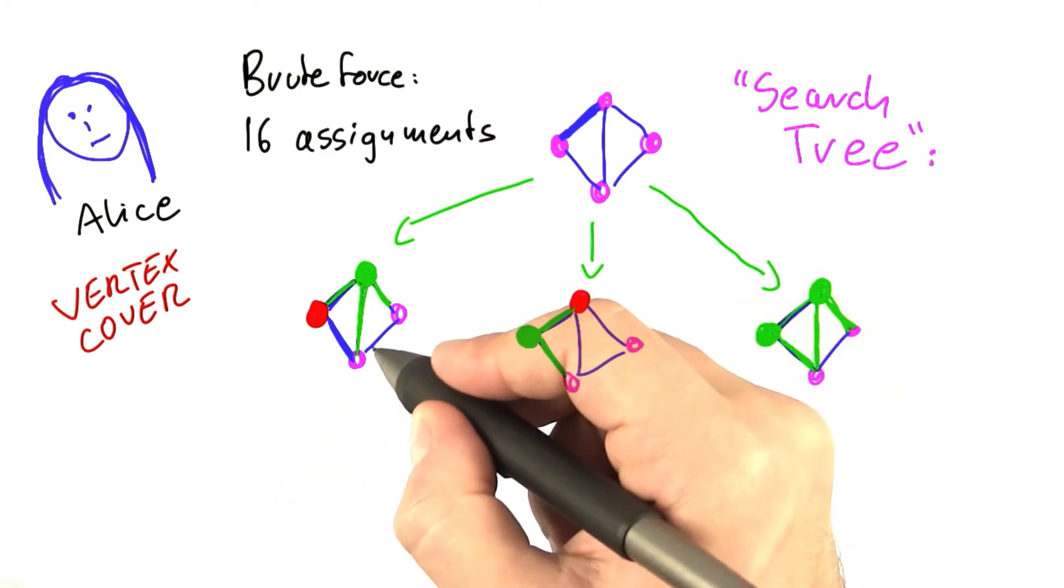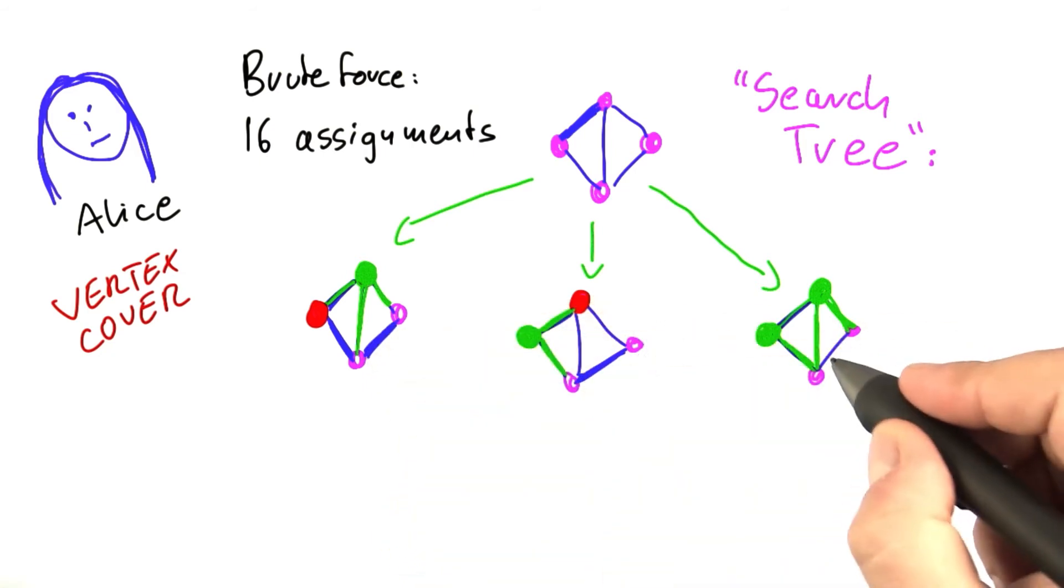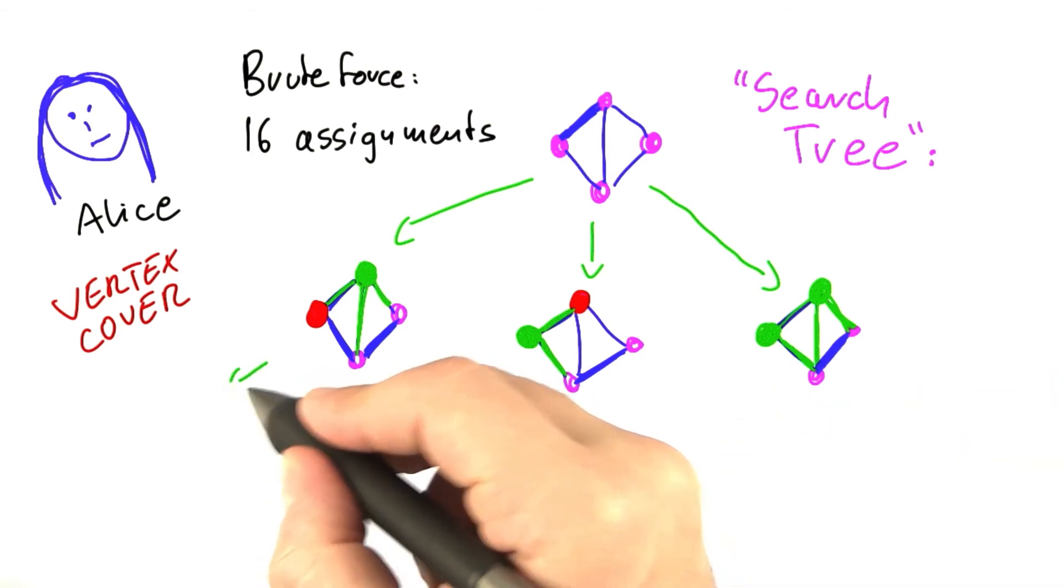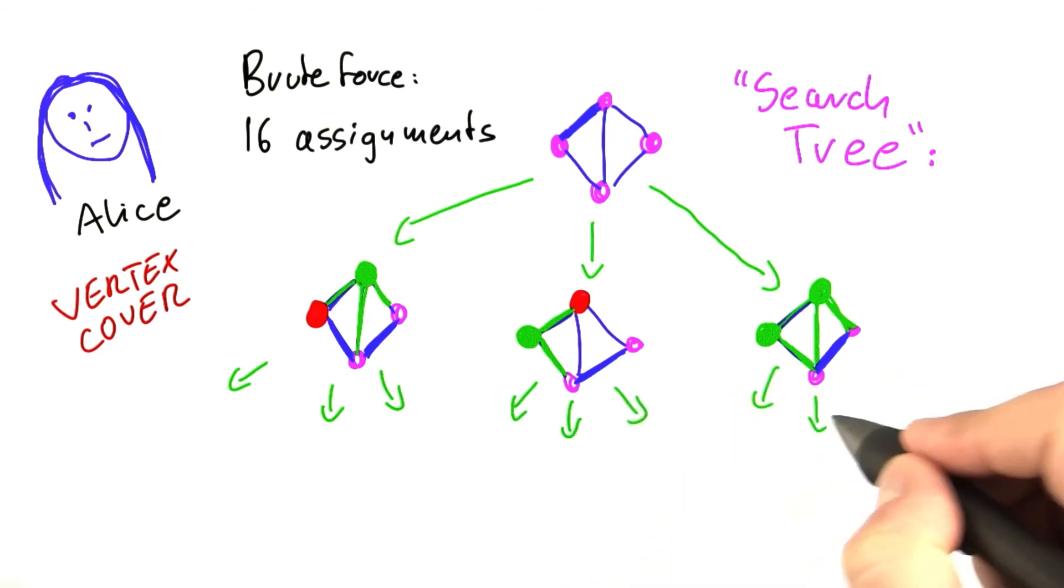So now let's do a worst case analysis and say that this is the edge that the algorithm considers next. In all of the three cases the edge is uncovered. So it again goes into three possibilities here, three possibilities here, three possibilities here.